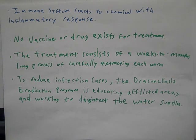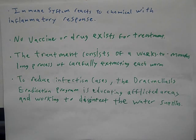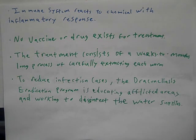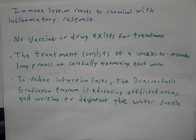The immune system's only reaction to the chemical is an inflammatory response around the afflicted area. As of now, no vaccine or drug exists for treatment. Treatment can only consist of physically removing the worm from the human, which can take anywhere between weeks to months, because the worms can grow up to a meter long inside the human's body. If they are broken off during extraction, the remaining part of the worm inside the body can begin to rot and cause an internal infection.